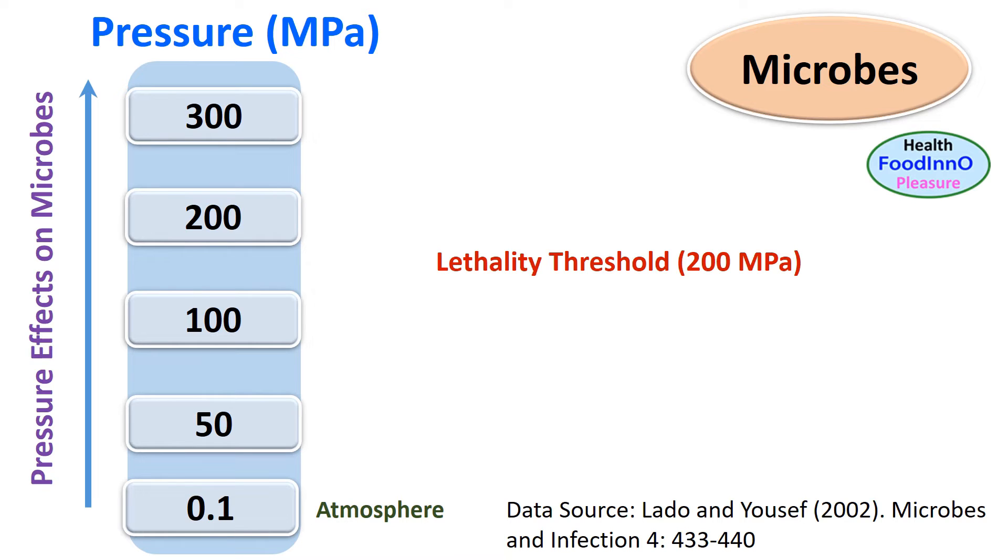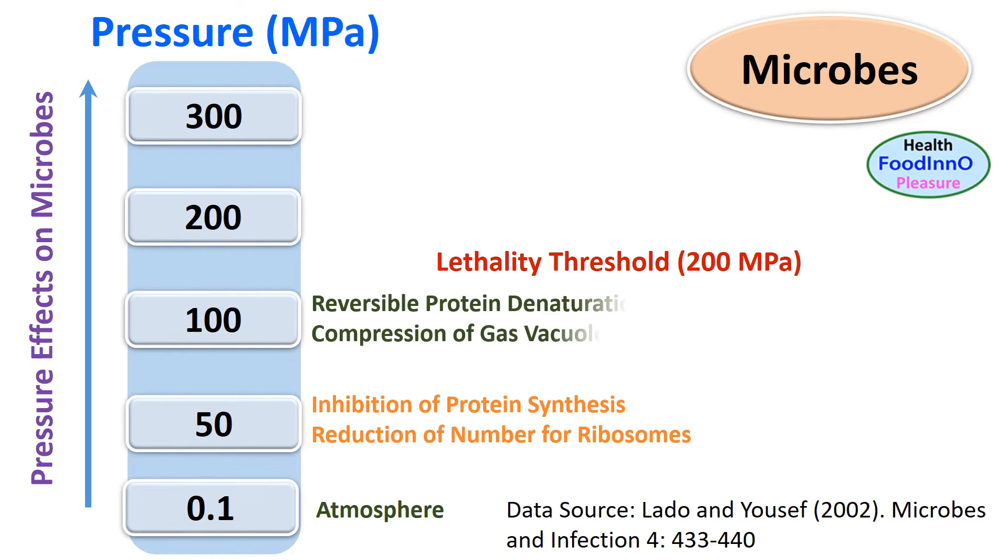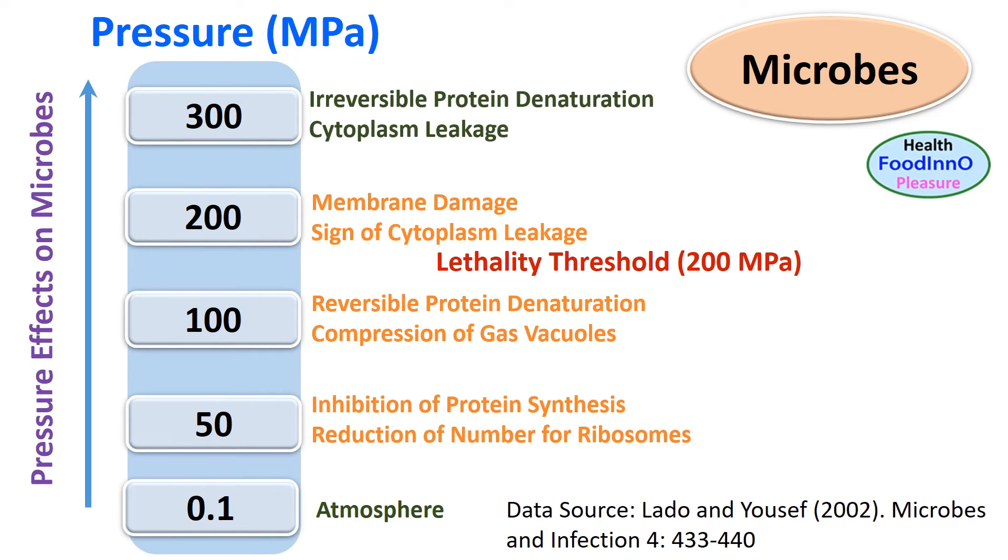Different levels of applied pressure can cause different types of damage to the microbial cells. At 50 megapascals, protein synthesis is inhibited and the number of ribosomes are reduced. At 100 megapascals, reversible protein denaturation and compression of gas vacuoles are observed. 200 megapascals is the microbial lethality threshold. At this pressure, membrane damage and signs of cytoplasmic leakage are observed. At 300 megapascals, irreversible protein denaturation and cytoplasmic leakage are observed.